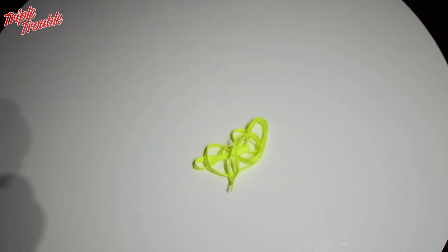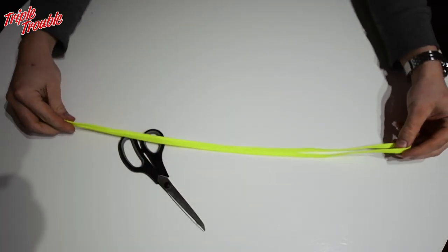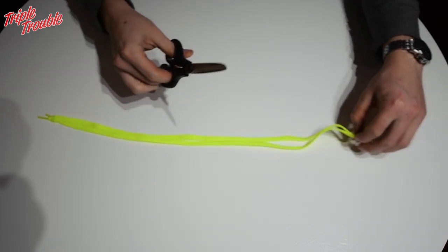You'll be needing two things: a shoelace and a pair of scissors. The average shoelace will get you two finger slings, so you can cut it in half.